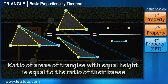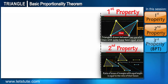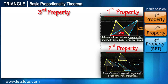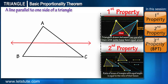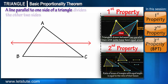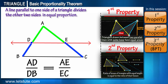In this session we are going to use these properties of triangles to introduce a new property. We are going to prove that if a line is drawn parallel to one of the sides of a triangle to intersect the other two sides in distinct points, the other two sides are divided in the same ratio.